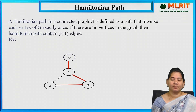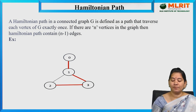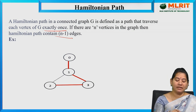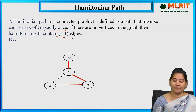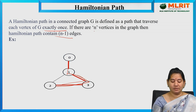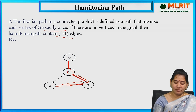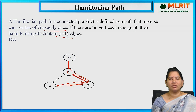Next, we have the Hamiltonian path. A Hamiltonian path in a connected graph is defined as a path that travels each vertex of G exactly once. If there are n vertices in the graph, then the Hamiltonian path contains n minus 1 edges. For example: 0 to 1, 1 to 3, 3 to 2 — with 4 vertices and 3 edges (4 minus 1 equals 3).